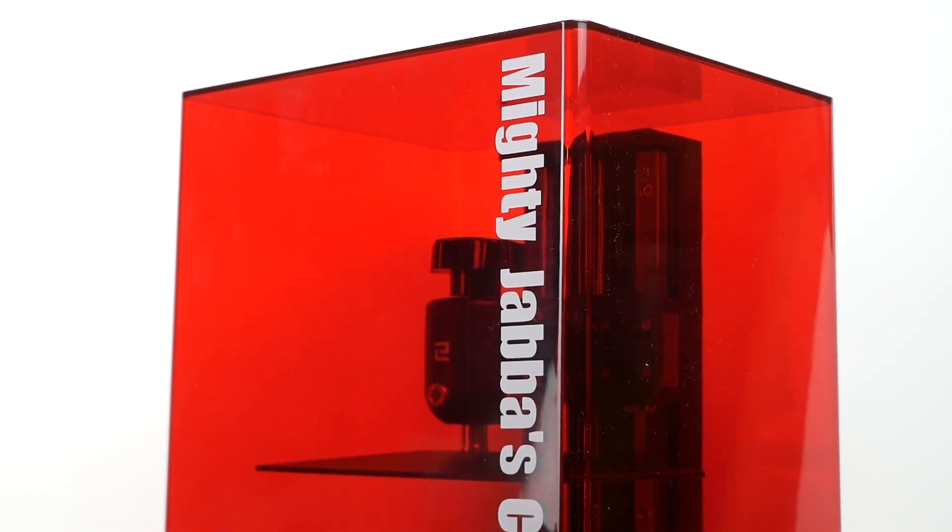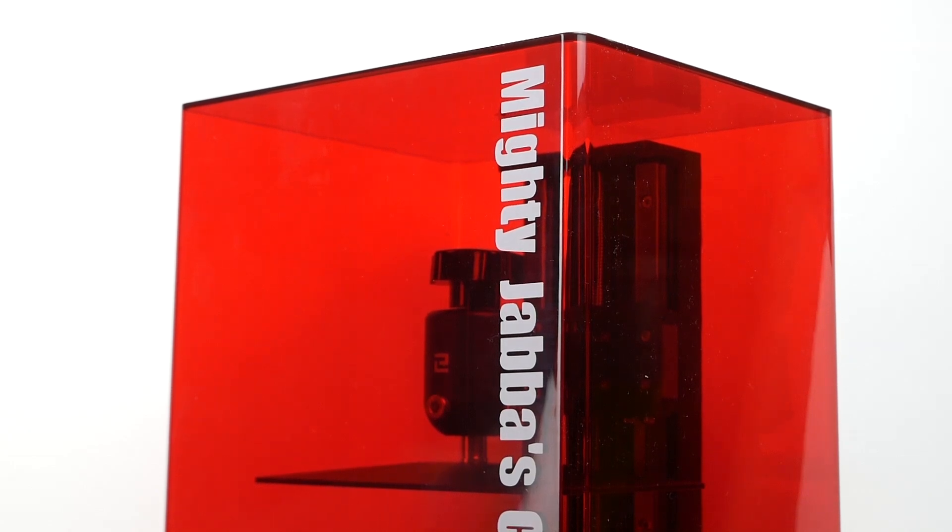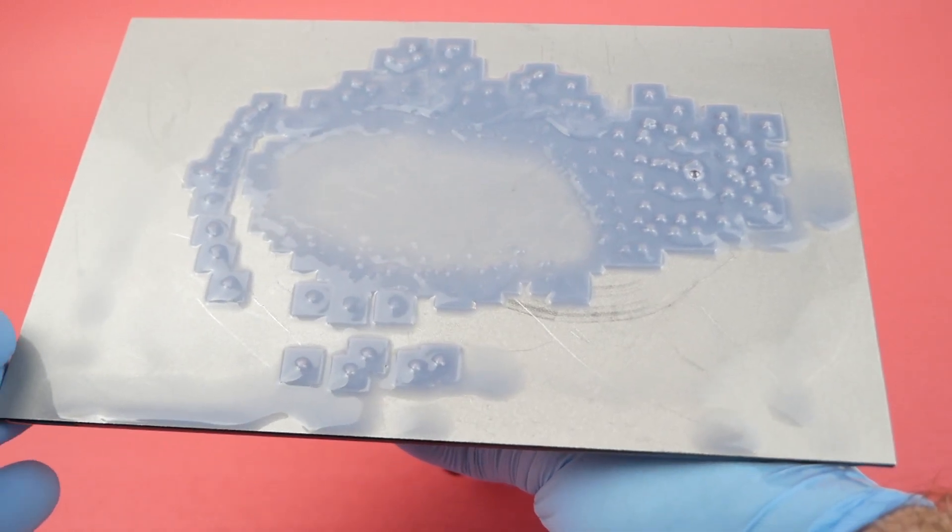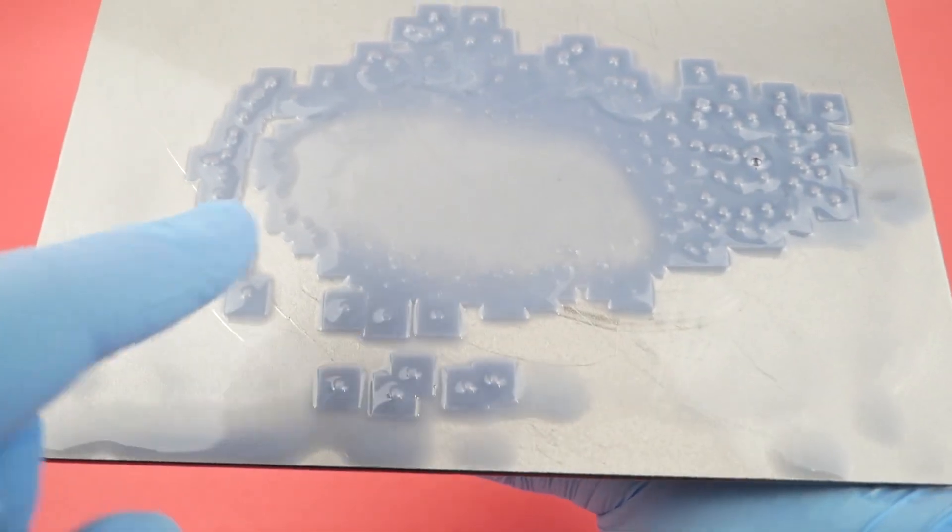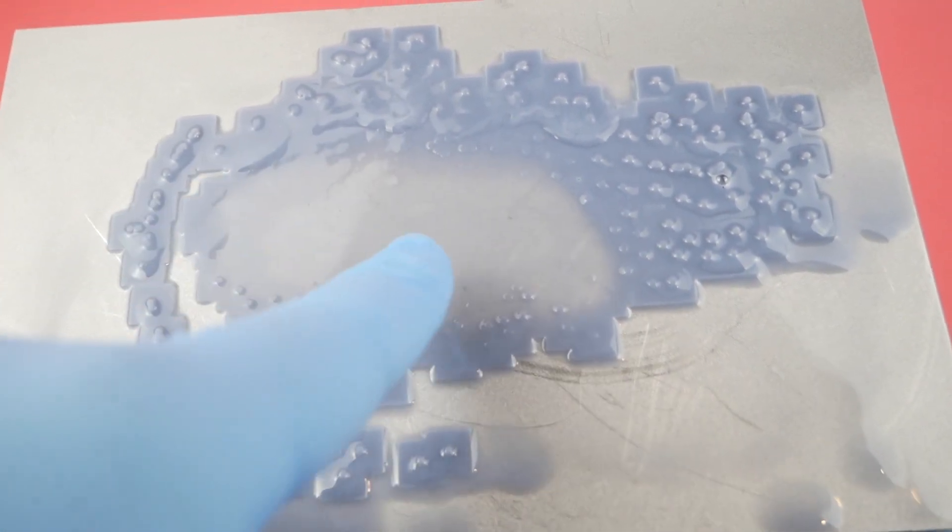One thing that can be kind of frustrating when using these machines is that there are a lot of potential variables. It might be something that you've done wrong in the settings, or it might be your resin, or it might even be the temperature of the room, theoretically. But in this case it turned out to be the FEP film on the bottom of the vat that had gotten damaged, and you can sort of see the effects of that here.